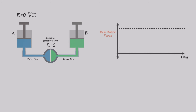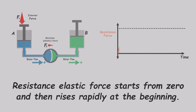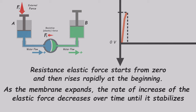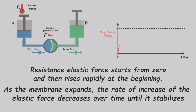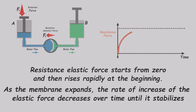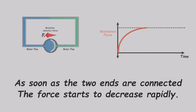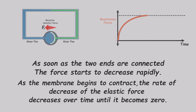We can plot the membrane resistance force over time. Now let's examine the process in slow motion. Initially, the resistance force is zero. When we apply an external force, the resistance force doesn't increase instantly — it begins from zero and then rises rapidly. However, as the membrane starts to expand, the rate of increase of the elastic force decreases over time until it matches the applied force. Now let's remove the pistons and connect the two ends. The force begins to decrease rapidly, but as the membrane starts to contract, the rate of decrease of the elastic force slows down over time until it becomes zero.